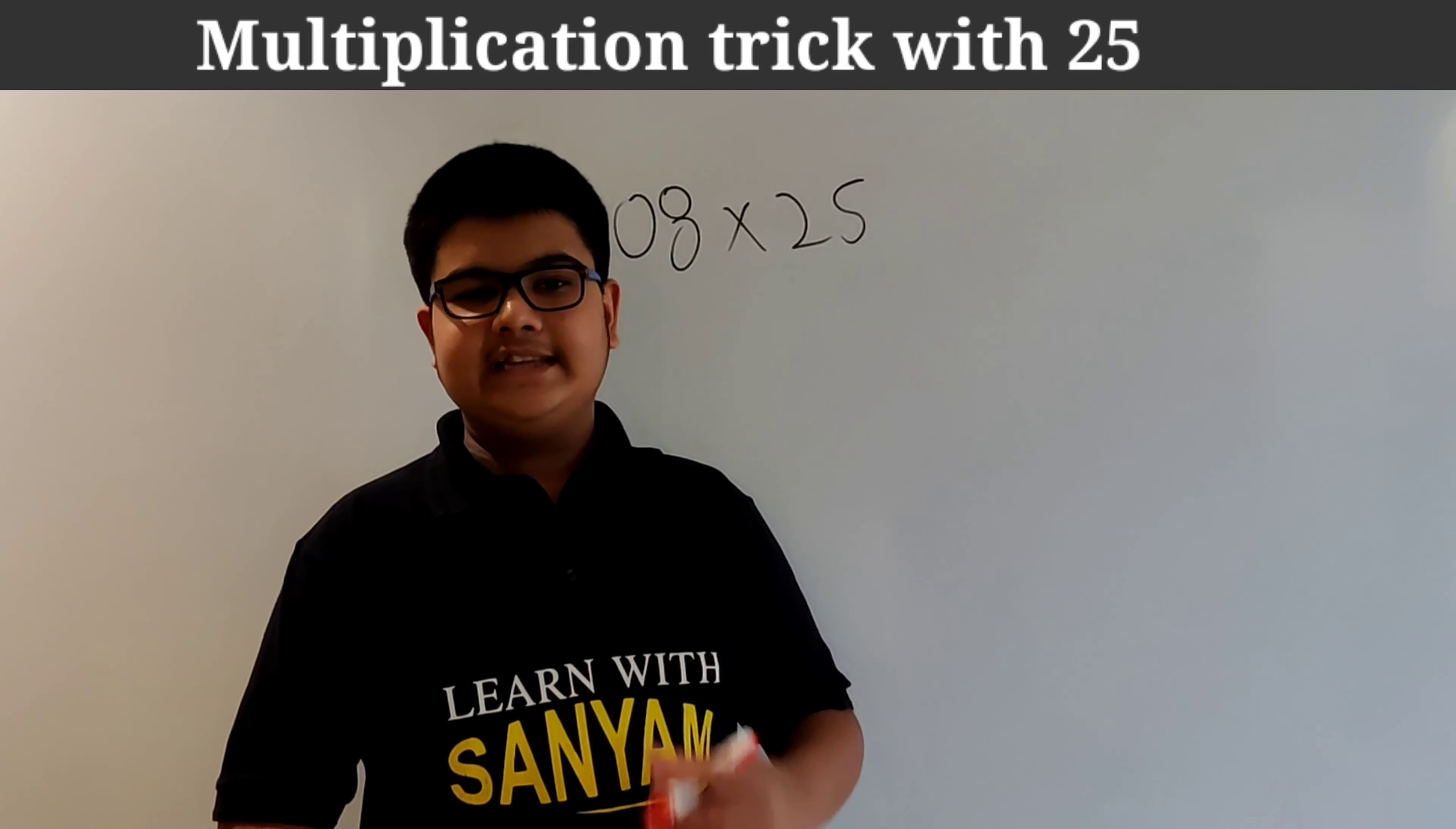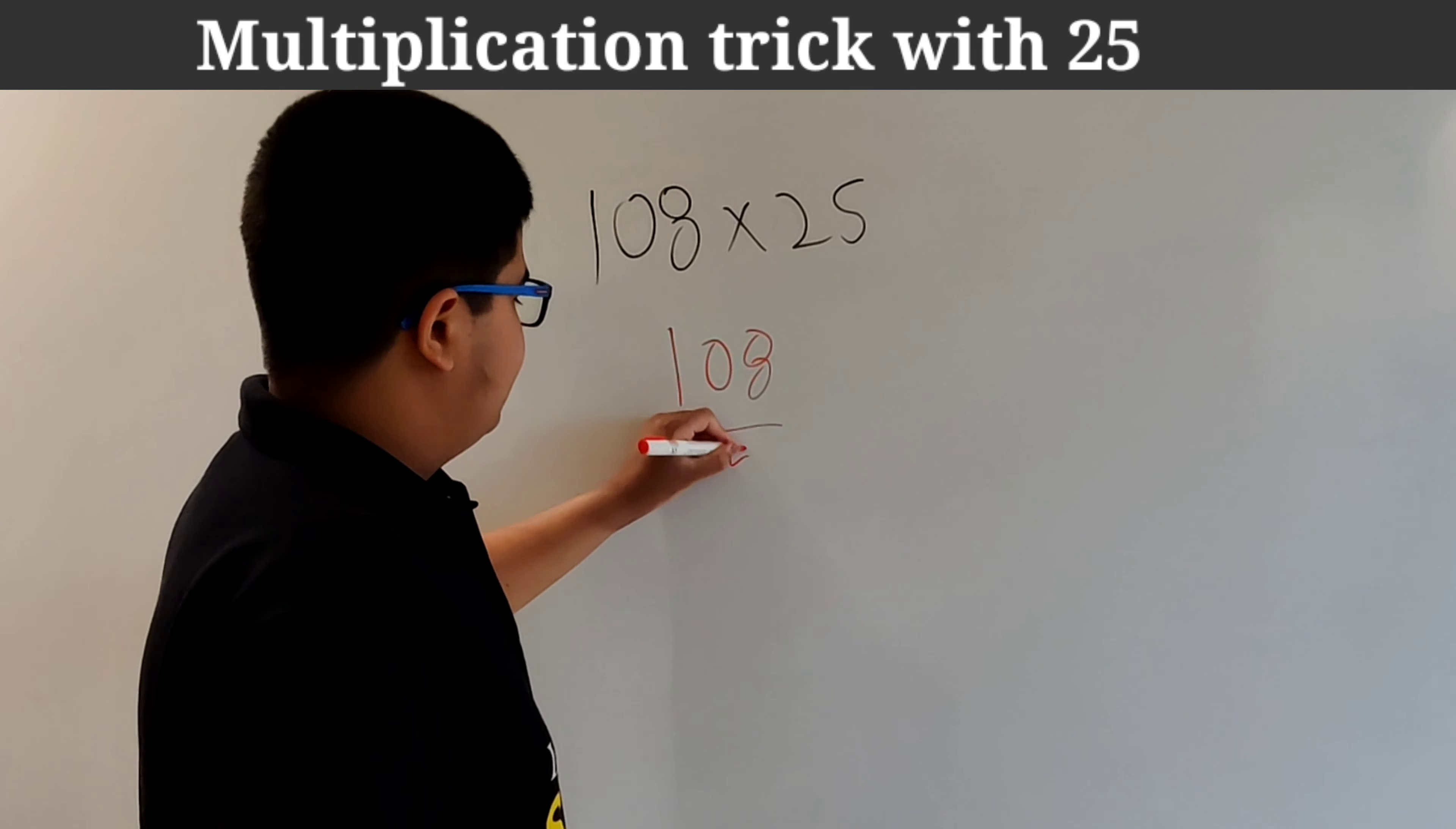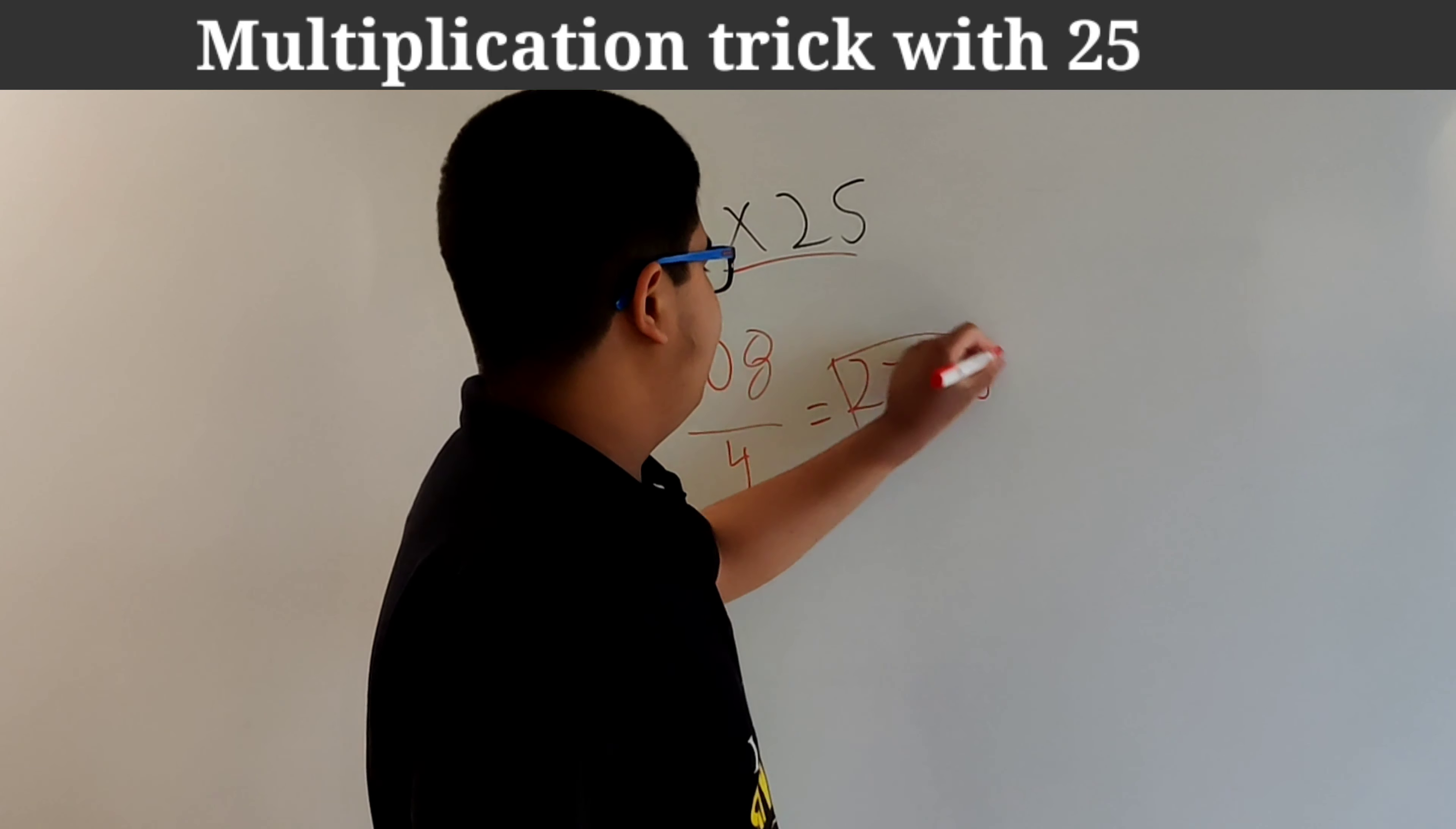Similarly we can use the same approach to multiply any number by 25. So consider that we have to multiply 108 by 25. So for this in step 1 we will divide the number by 4. So in the earlier cases we were dividing the number by 2 but in multiplication with 25 we will divide the number by 4. So this will give us 27. And now put 2 zeros in the end. So our answer will become 2700.